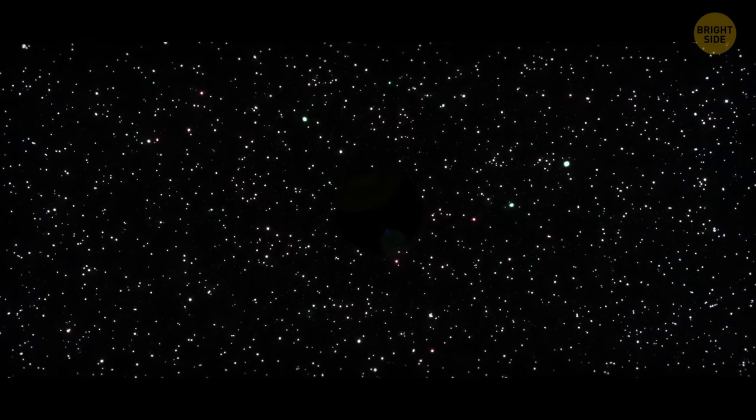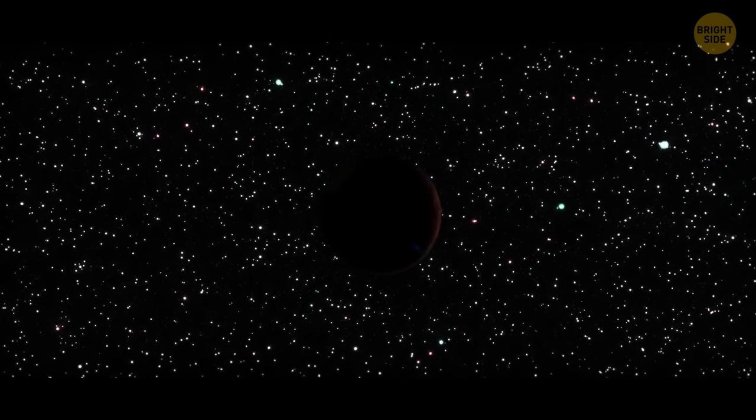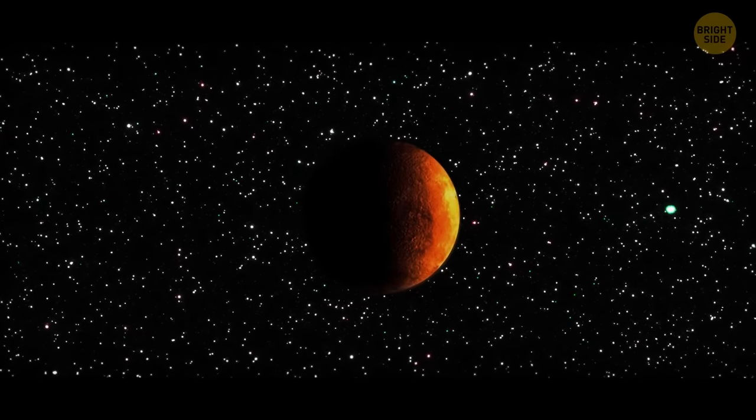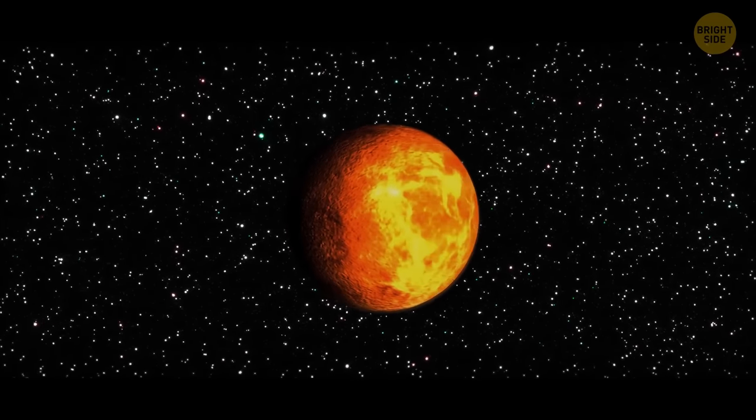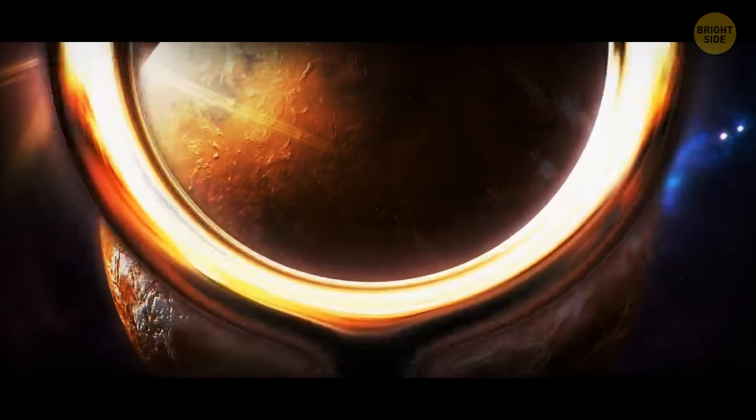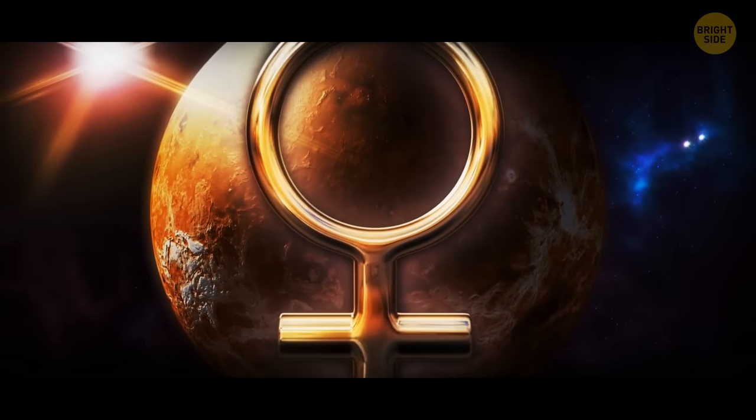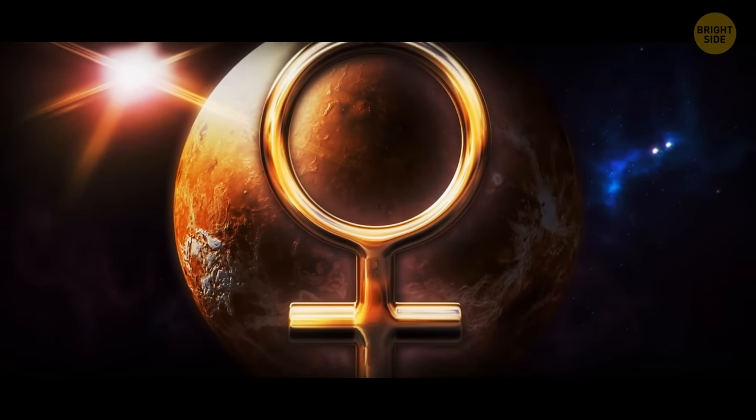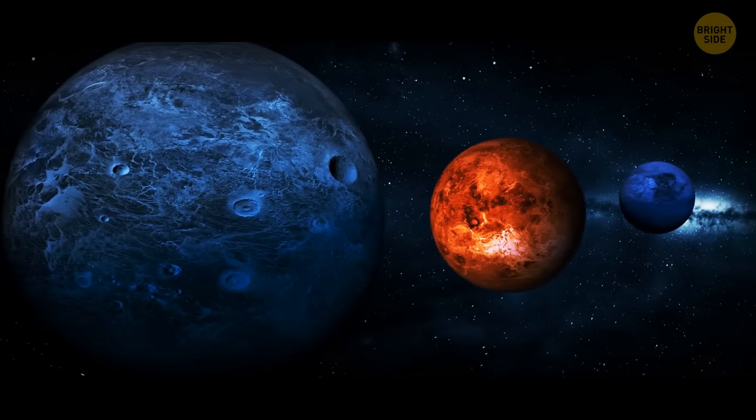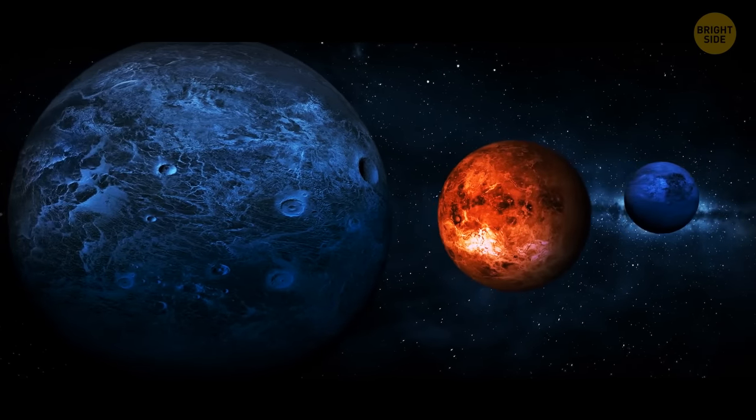Venus, for example, has a retrograde rotation, which means that the sun rises in the west and sets in the east on that planet. So now, when the horoscope says something like Mercury in retrograde, you'll know what it means. Oh, but Venus isn't the only weird one in our solar system. There are definitely some wacky ways that planets can rotate.